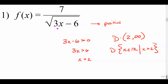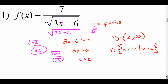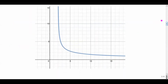We can test this. If you put in one in the denominator, three times one minus six gives you negative three under the square root — that does not reside in our real number system, it gives you an imaginary number. If you plug in three, three times three is nine, nine minus six is three, so you get seven over the square root of three — that's possible. If you plug in exactly two, you get the square root of zero, which leaves you with seven divided by zero, and you can't do that. The graph shows everything to the right of the vertical line x equals two.